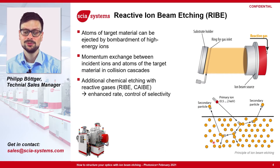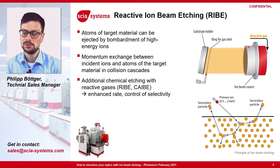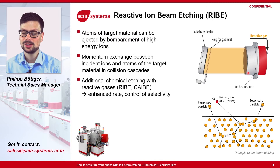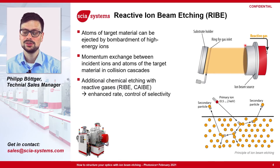In this video the focus is on ion beam etching. With ion beam etching the plasma is generated within an ion beam source and is separated from the substrate which is at the substrate holder. The positively charged ions are extracted from the plasma by applying a voltage to a grid in front of the ion beam source, and then the ions are accelerated by the voltage towards the substrate to etch material.